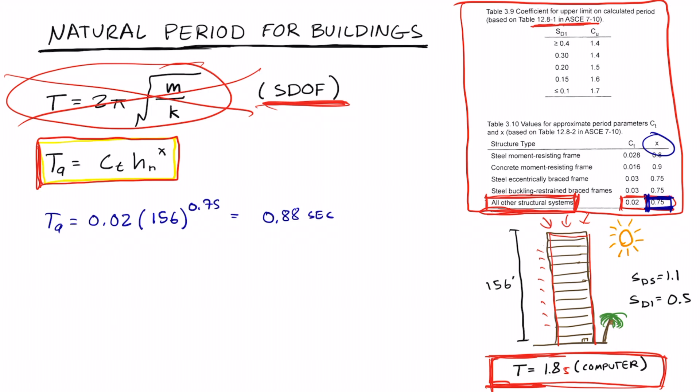But we're not done yet because we have to check the upper limit. The equation for the upper limit is CU times TA. And CU is found also using this table. We're given our SD one is 0.5, so if SD one is 0.5, then our CU will be 1.4. Now we have CU is 1.4, our TA is 0.88, and that will equal 1.24 seconds.